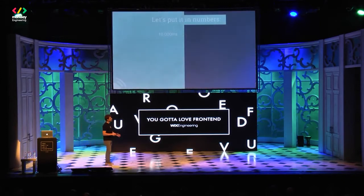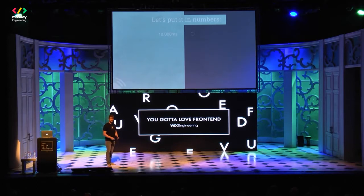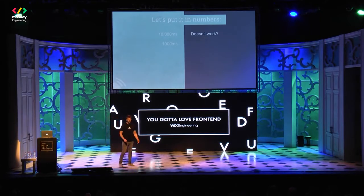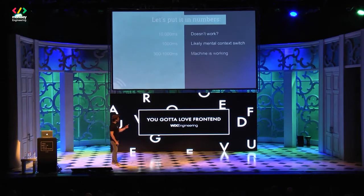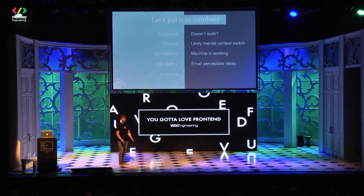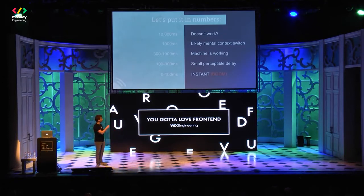If I want to put it into numbers: when you wait for something to happen on the web for 10 seconds, you get this odd feeling that something is not working. To the user, 10 seconds feels like it doesn't work. If the user presses something and waits more than one second, you have a mental context loop — they start thinking about other things. Between 300ms and one second, they think something is working. Up to 300ms is a small delay. But if something happens between zero and 100 milliseconds, it feels instant — which we call the boom effect. I want to focus on that in my presentation.